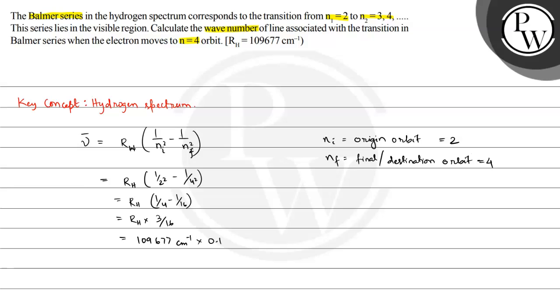And this equals 109,677 cm⁻¹ multiplied by 0.1875. So the product of these two numbers is equal to 20,564.43 cm inverse.